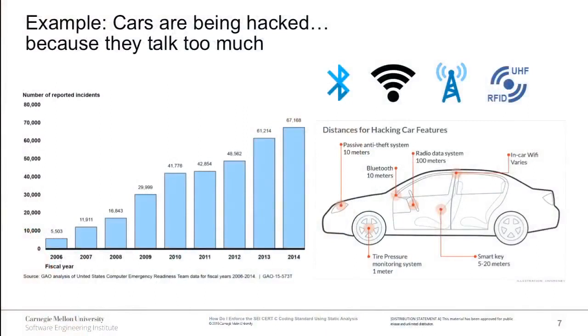Using cars as an analogy for IoT: the number of reported car hacking incidents is going up year over year, and that number is not going to go down. The number of computers in your car is also rising. It's not uncommon for high-end cars to have over a hundred million lines of code. We've moved well past the era when a few developers could look over the code and say, 'Yeah, that's going to do what we want.'